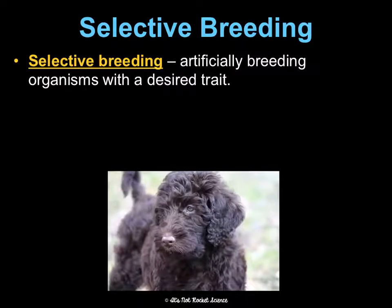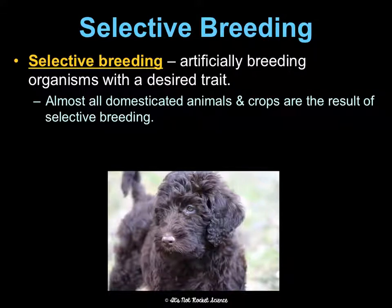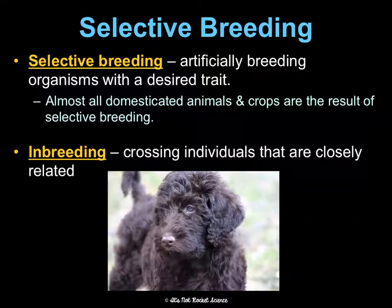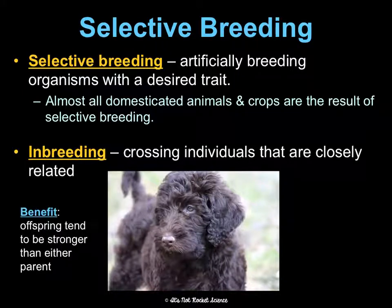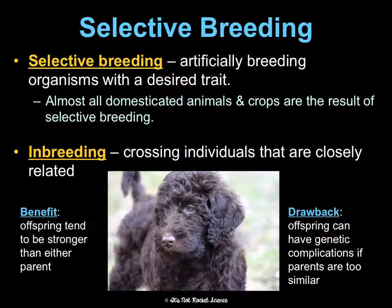Selective breeding is artificially breeding organisms with a desired trait. Almost all domesticated animals — your pets as well as crops and the food you eat — are the result of selective breeding. Inbreeding is a problem when we start breeding individuals that are too closely related. The benefit is we get offspring that are stronger or have better traits, but the drawback is there can be complications, especially if the parents are very similar.